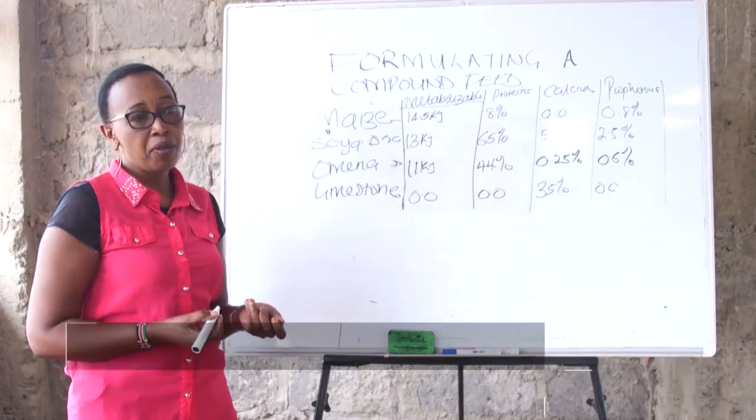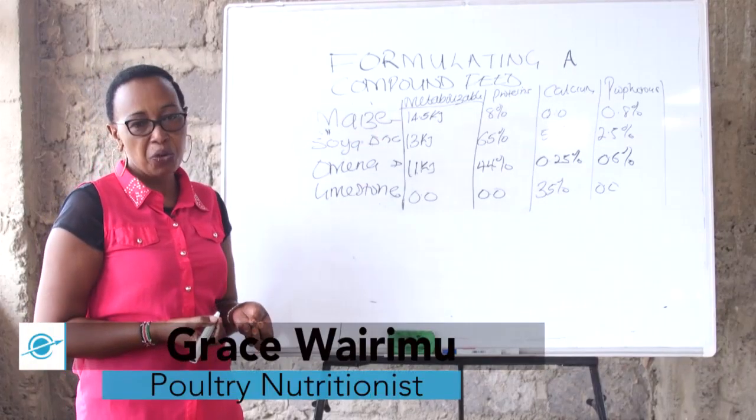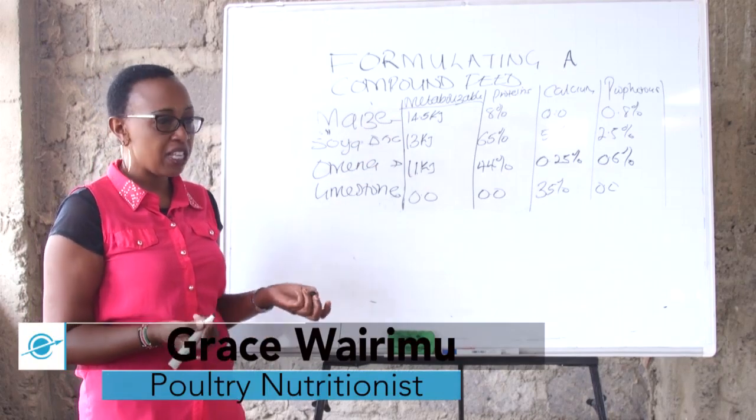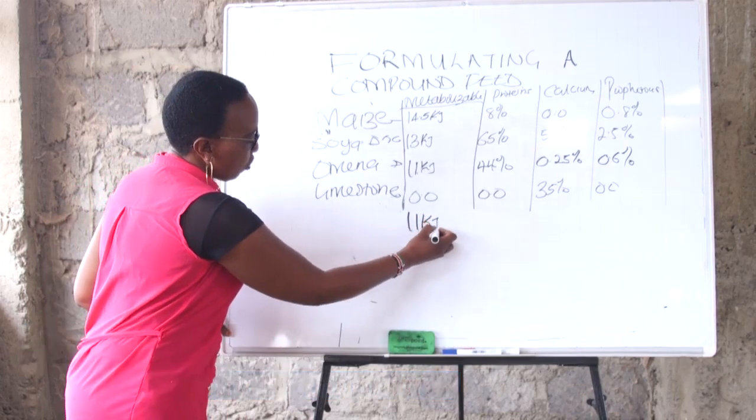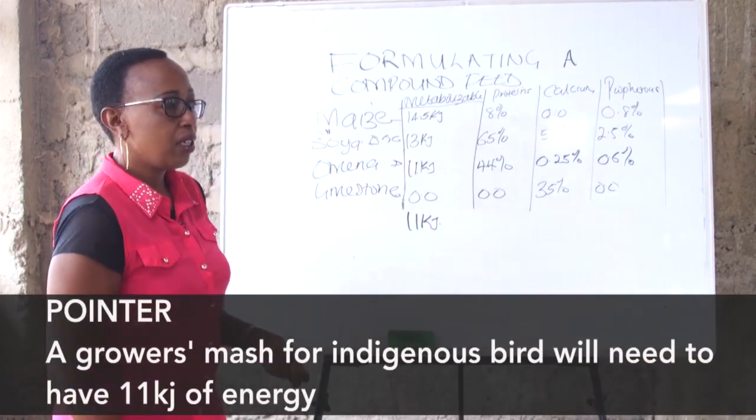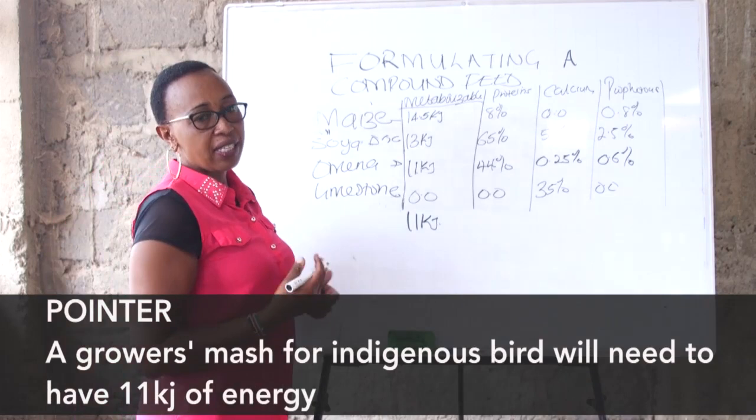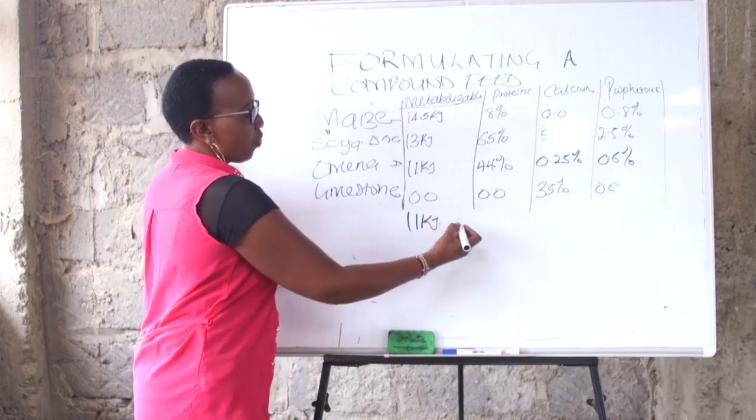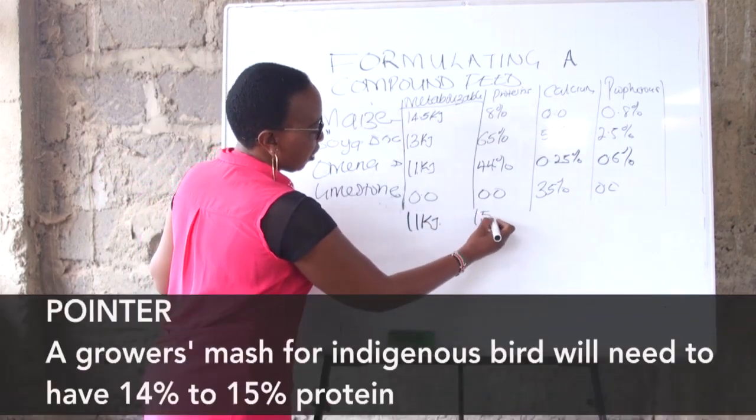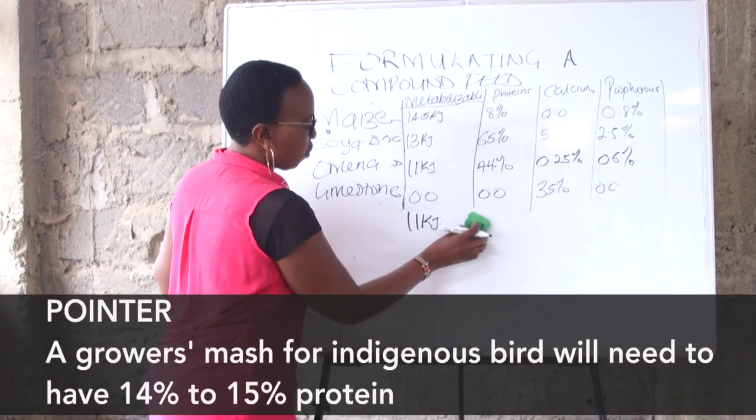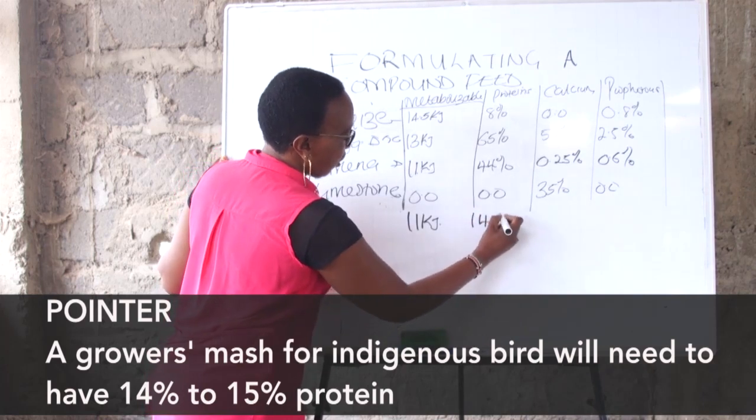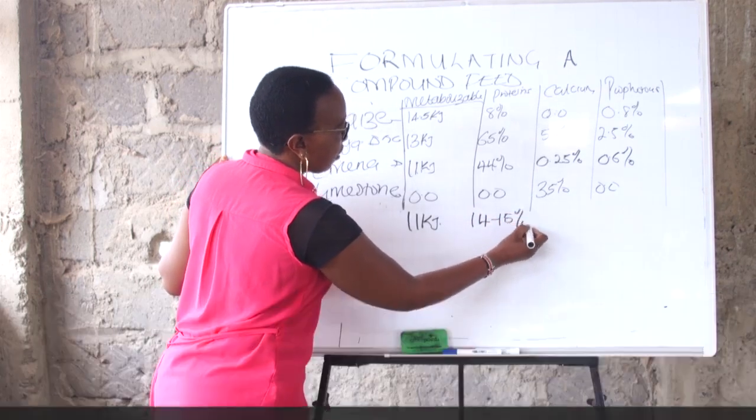Basically, the metabolizable energy that we require in a grower's kienyeji mash is just 11 kilojoules. It's a bird that we need to give us eggs, so we should give it 15 percent protein. Actually, if you do 14 to 15 percent, you will not be wrong.